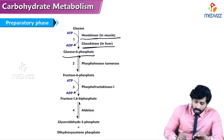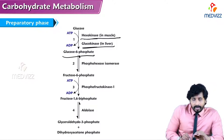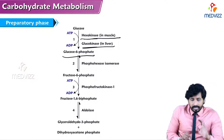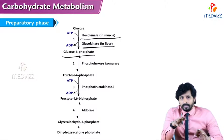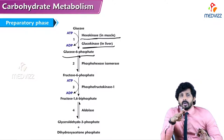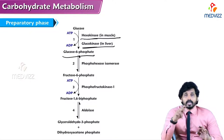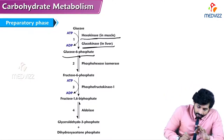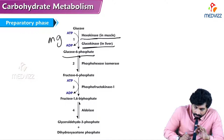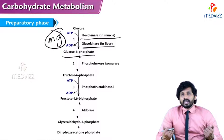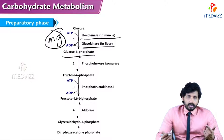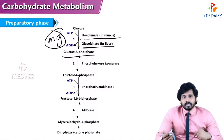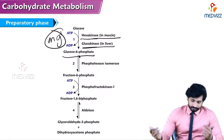Glucose is phosphorylated at carbon six to form glucose-6-phosphate. The phosphate donor is ATP — the terminal phosphate of ATP is transferred to glucose, converting ATP to ADP. This reaction also requires magnesium as an inorganic activator, as studied in enzymology where activators are inorganic and coenzymes are organic.